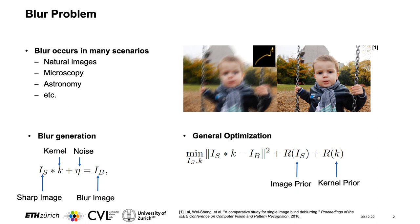A general optimization process for this would be to have a data-fitting term where our estimate of the sharp image is convolved with the kernel and we see how close this is to the blurred image we have. Plus, because this is an ill-posed problem, we have an image prior and a kernel prior.